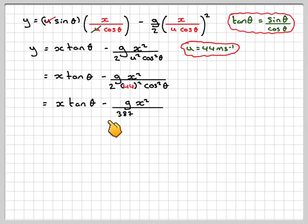And we're going to have x tan theta minus, when we work out 2 times 44 squared, we get 3872 cos squared theta. So either of these would be OK to write as the answer.